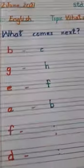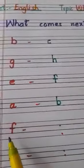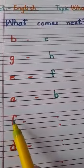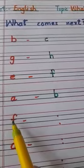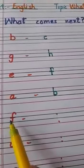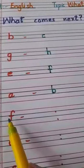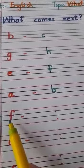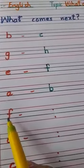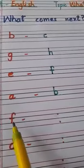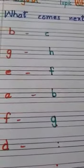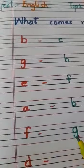Next is F. This is small letter F. What comes after F? We will speak: A, B, C, D, E, F, G. Next letter is G. G comes after F. So we will write here — G. F, G.